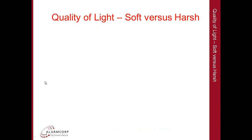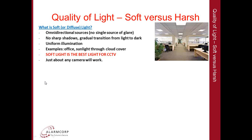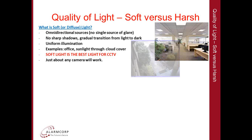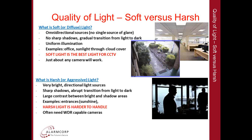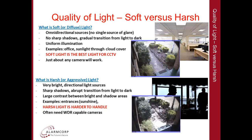Quality of light: soft light versus harsh light. Soft light is omnidirectional light with many sources and no single source of glare. You have no sharp shadows, a very gradual transition from light to dark, and fairly uniform illumination. The best examples are a typical indoor office or outside under cloud cover. Soft light is the best light for CCTV — just about any camera will work. Harsh or aggressive light involves very bright, very directional light sources with very sharp shadows, abrupt transitions from light to dark, and a very high contrast between bright and shadow areas. Examples include an entrance into a house, a factory with a roller door open, or an underground car park entry or exit. Harsh light is harder to handle and you will often need a camera capable of wide dynamic range.